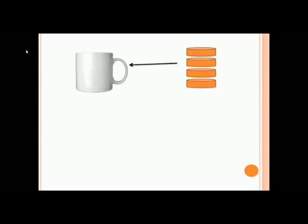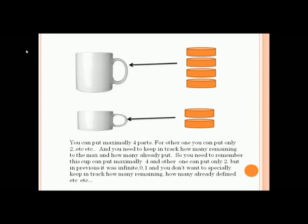If we take shapes like this, one can put four of these shapes into the cup and another can put two of these shapes into the cup. Those are specific values and have to remember those specifically. Previous values are not like that.